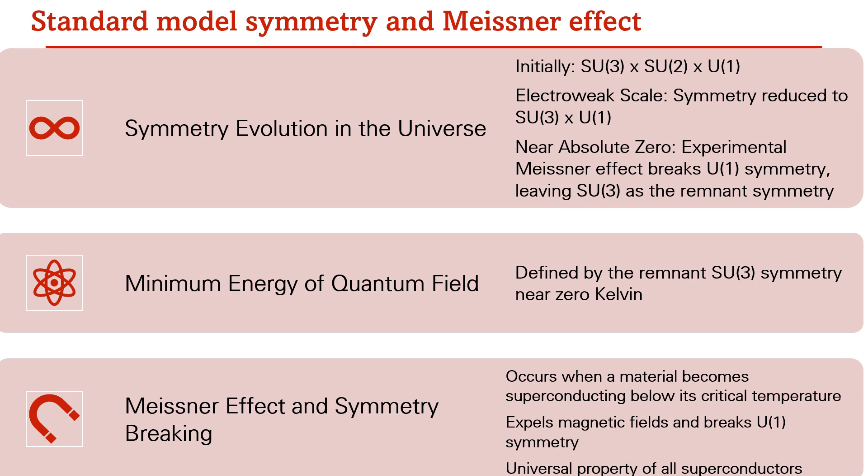What does the Meissner effect mean? It happens in materials and universally shows superconductivity — zero resistance — and the material starts to expel the magnetic field, breaking U(1) symmetry. This is the experimental basis on which I establish the solution I am proposing.